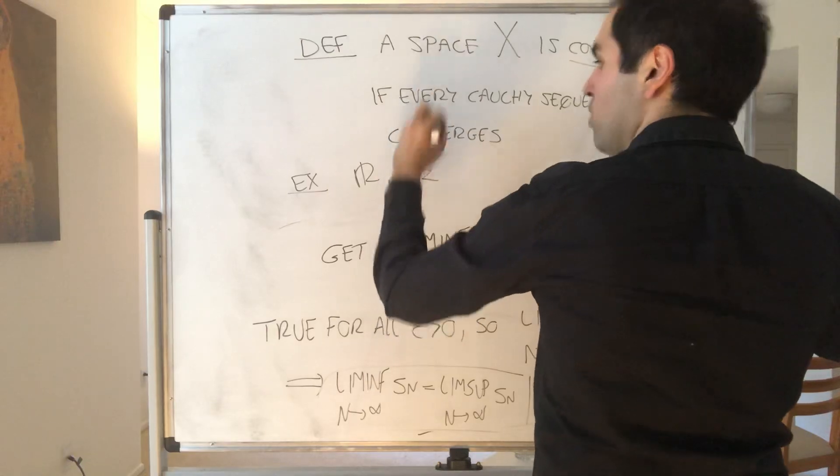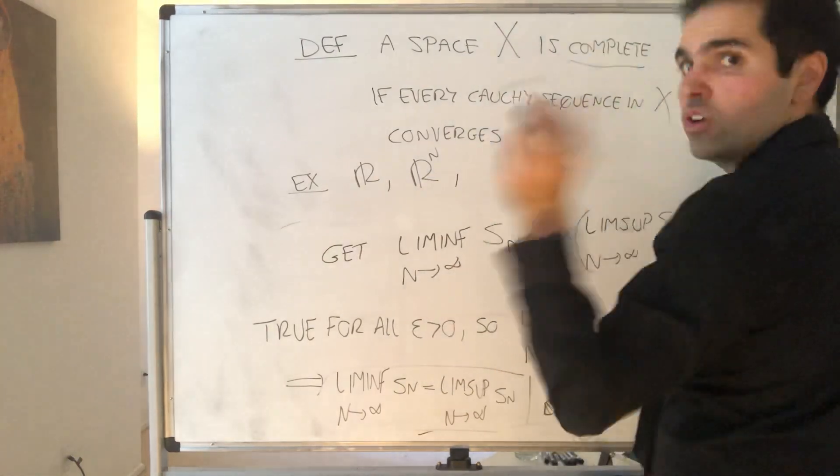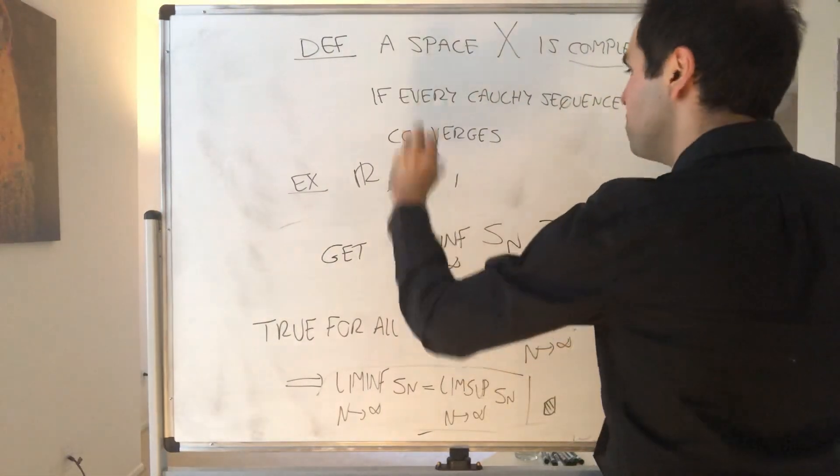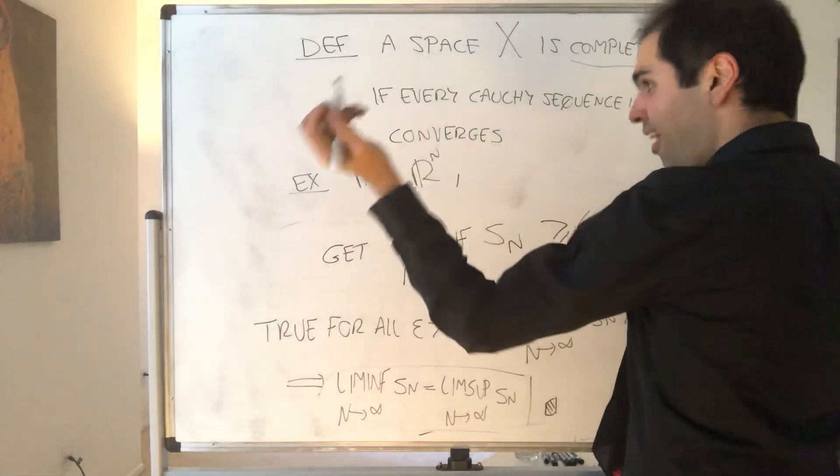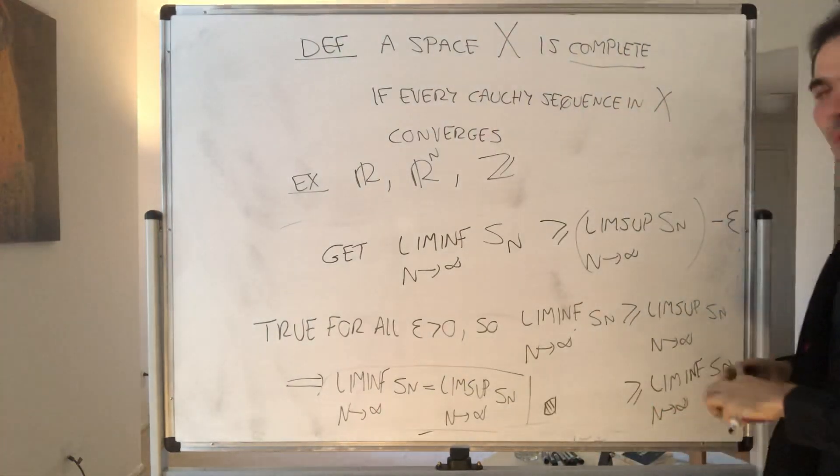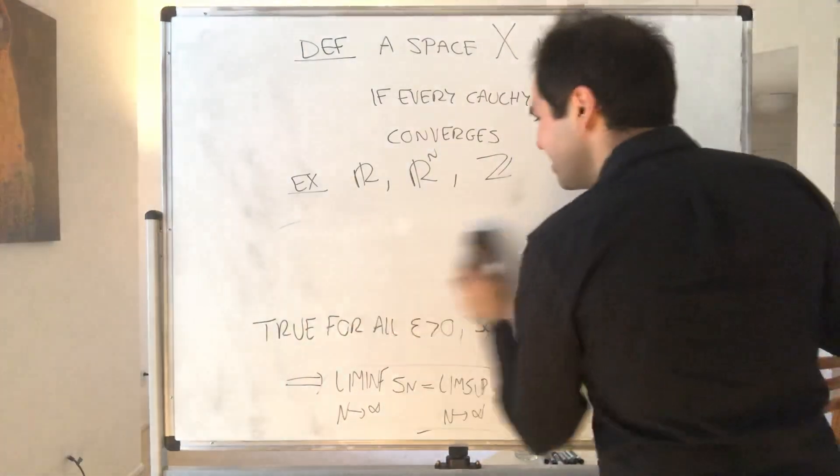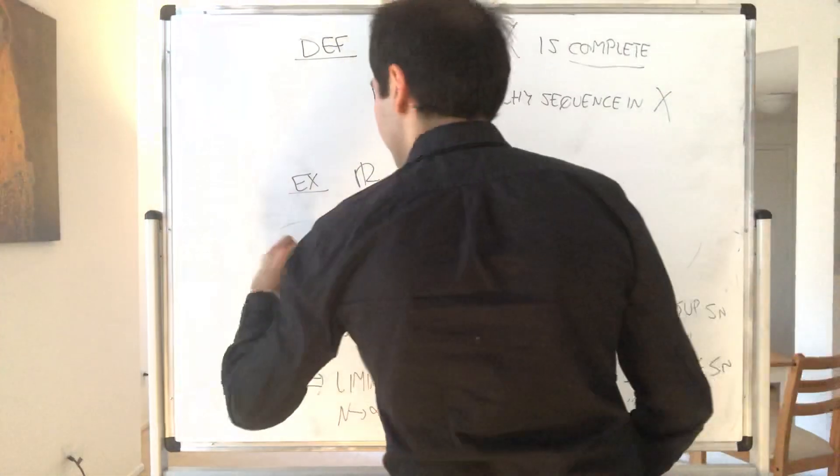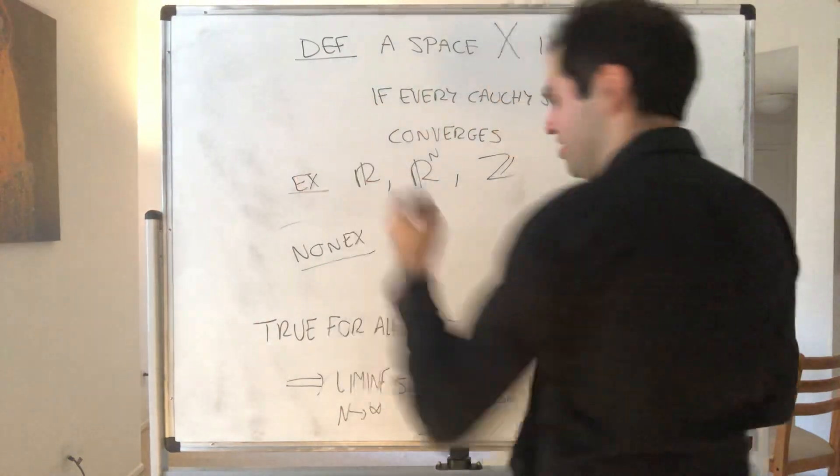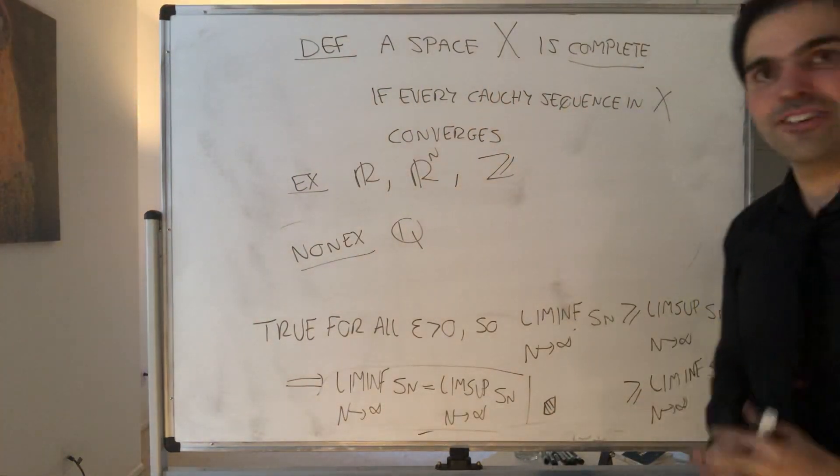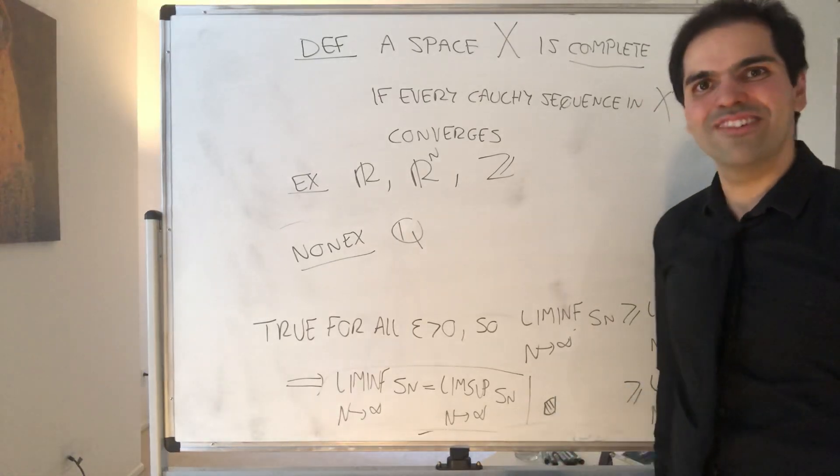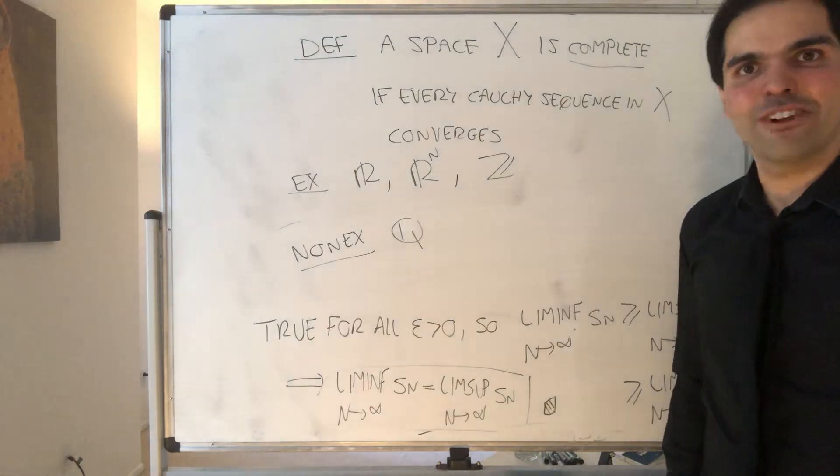So examples of complete spaces are the real numbers, but also Rm, and even continuous functions with the sup norm. And also, even though Z has holes, Z is complete. But examples of incomplete spaces are the rational numbers, which I have just shown. Complete spaces are very nice because we want Cauchy sequences to converge. All right, thank you very much.